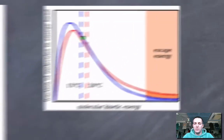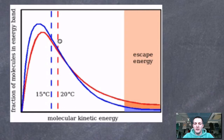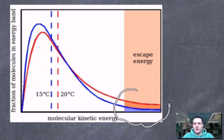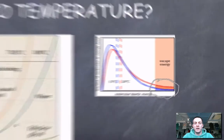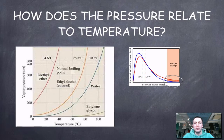Why does vapor pressure increase as temperature increases? Going back to the Boltzmann distribution: as temperature increases, the percentage of particles that have enough energy to escape from the liquid increases. If more particles can escape, there will be more vapor above the liquid and its pressure will increase. So we can explain the increase using kinetic theory.